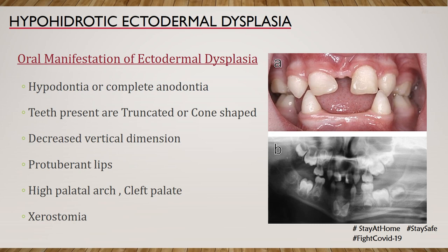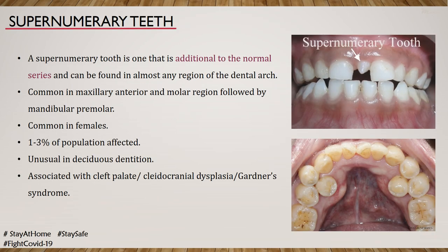The oral manifestations of ectodermal dysplasia include predominantly hypodontia or complete anodontia. The teeth are characteristically truncated or cone-shaped. The incisocervical or occlusocervical height is reduced, resulting in a decreased vertical dimension. The patient presents with protuberant lips and a high palatal arch or cleft palate. Since the salivary glands are affected, this results in xerostomia, that is dryness of the mouth. This is an important topic and I request students to remember each component well.